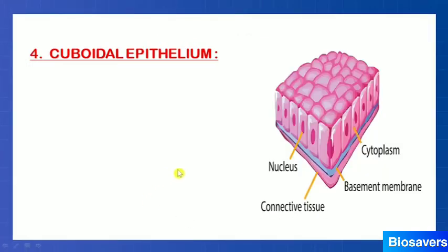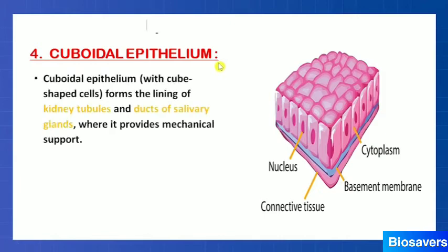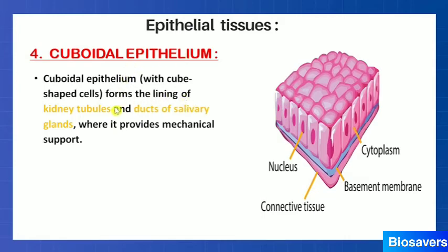Another type of epithelial tissue is cuboidal epithelium. As the name suggests, these cells are cube-shaped. They are present in the kidney tubules and the salivary glands, where they provide mechanical support.